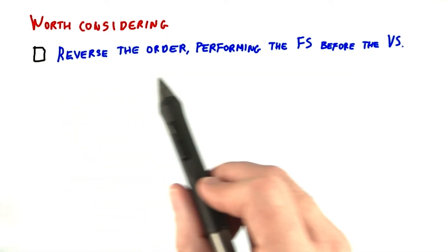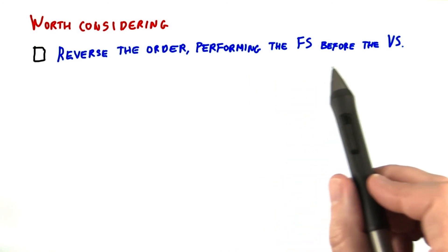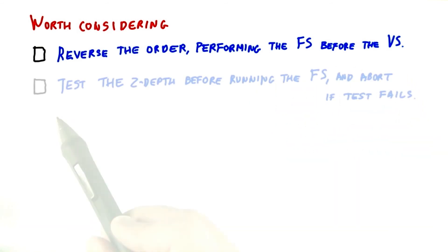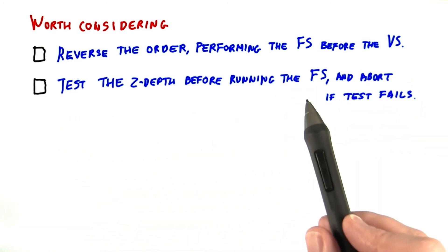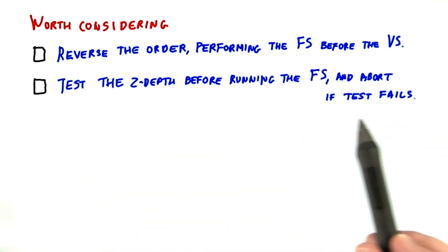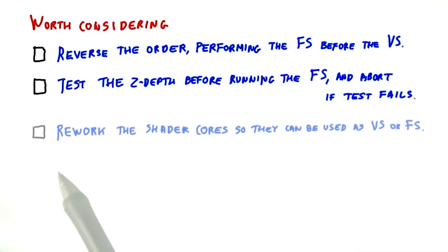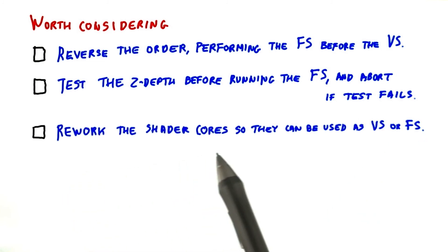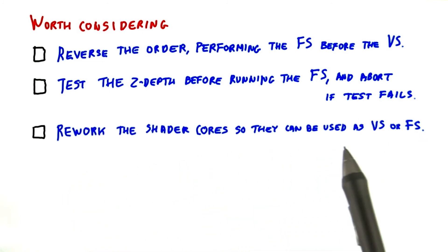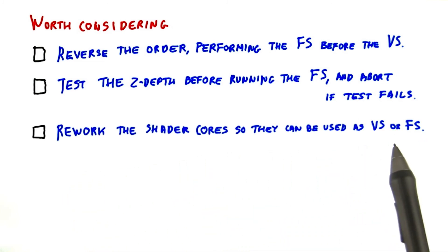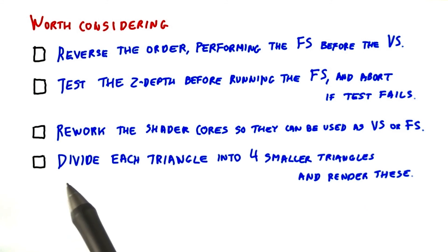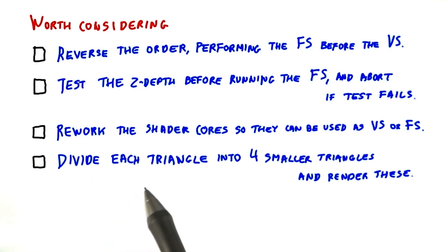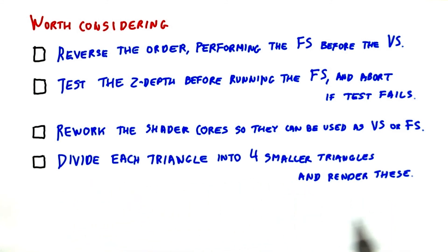The proposed ideas are: reverse the order, performing the fragment shader before the vertex shader; test the Z depth before running the fragment shader and abort if the test fails; rework the shader cores so they can be used as vertex shaders or fragment shaders; and divide each triangle into four smaller triangles and render these.